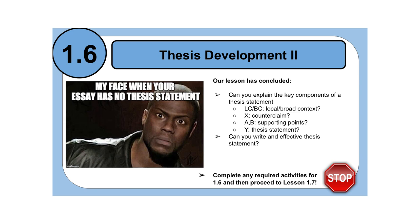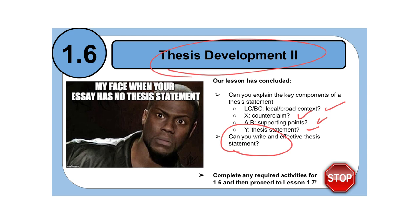Our lesson has ended, or at least the video lesson part, for Thesis Development Part 2. You should now be able to explain the key elements of a thesis statement: L, C, B, C, X, A, B, and Y — what they are and how to go about writing them. After you've practiced with your Commonwealth group and gotten a little more comfortable with the thesis form, you should be able to effectively say yes, I can write a thesis statement. Complete the activity for 1.6, which is the sentence strips. Once you've completed that and feel comfortable, if 1.7 is available, go ahead and move forward and do that.